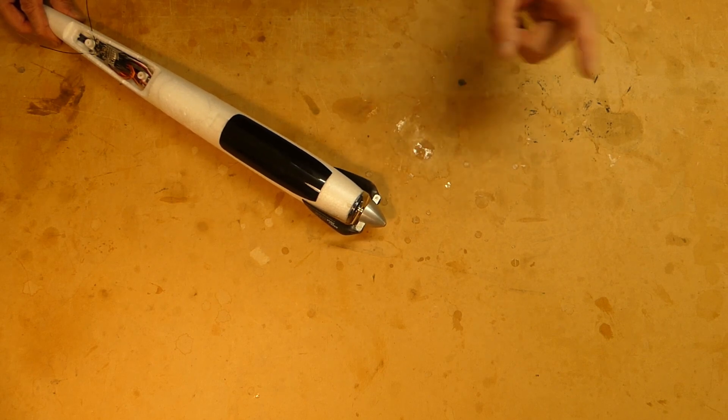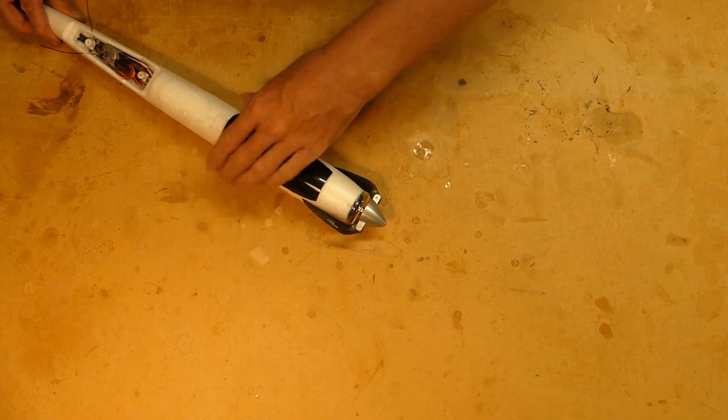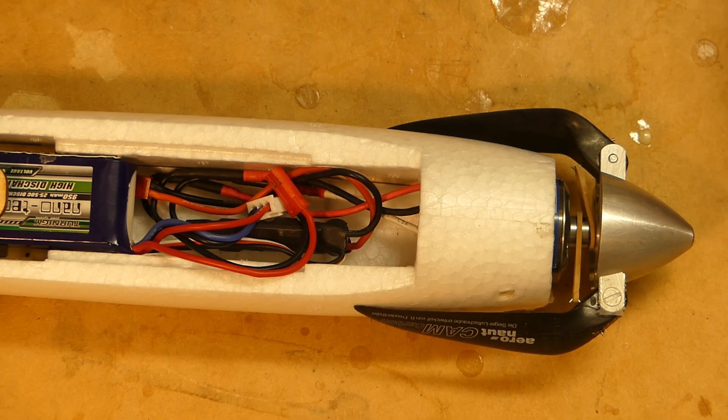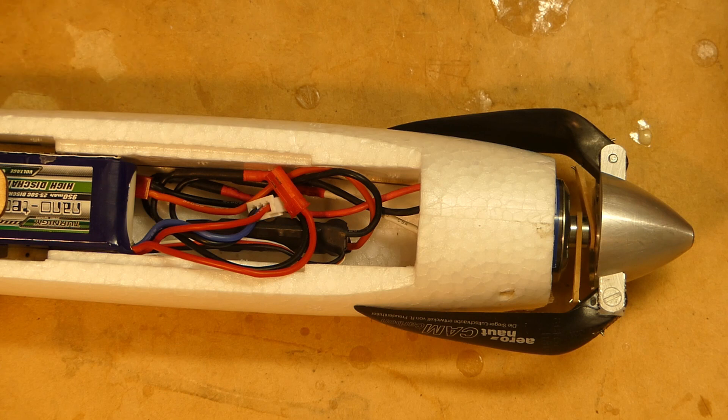But it's also a lot heavier so this is what I did in order to make it balance where it should. The ESC is the stock ESC from the old U-Glider and that works well enough. It sits up the front.